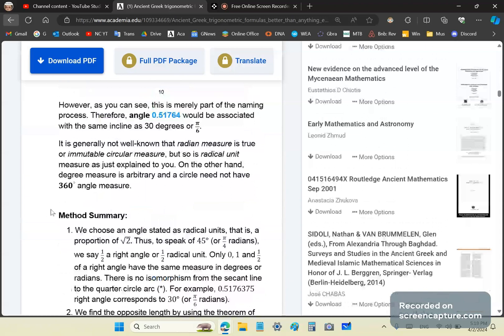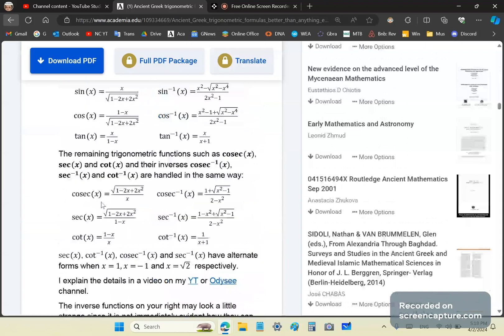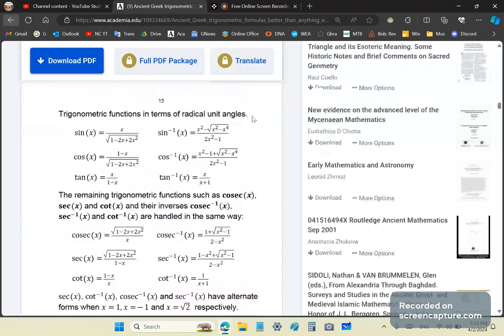So you can go through this article. It requires a lot of study, and these are the trigonometric functions in terms of radical unit angles. So what does radical unit angle mean? I'm not going to tell you. Study the article. Don't be lazy. Get off your ass and do some studying.